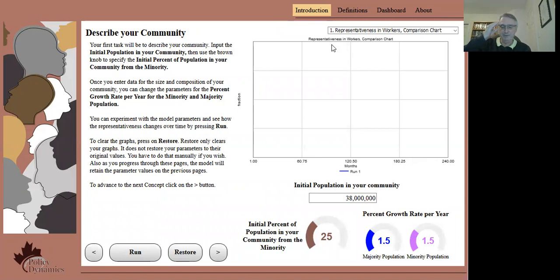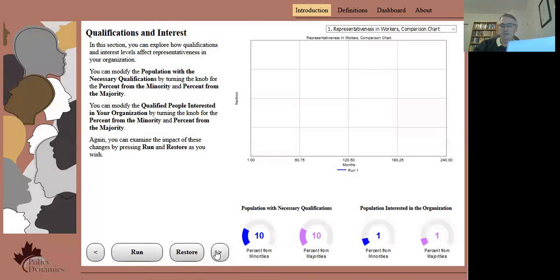First you need to describe your community in a general way and specify the size of the minority population you're hoping to represent. Then you need to specify the percent of the population with the qualifications you're interested in and specify the percent of these qualified people interested in applying for an entry-level job in your organization.